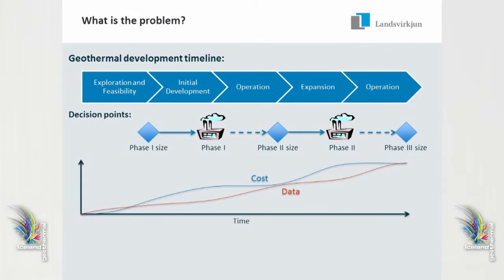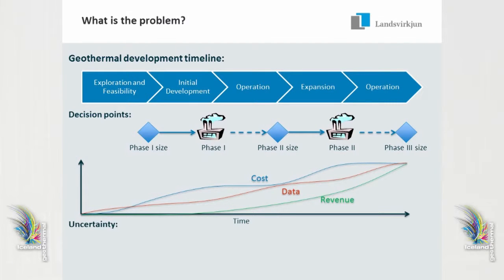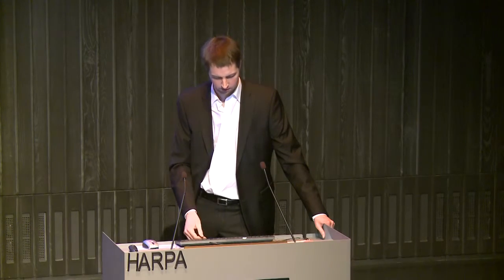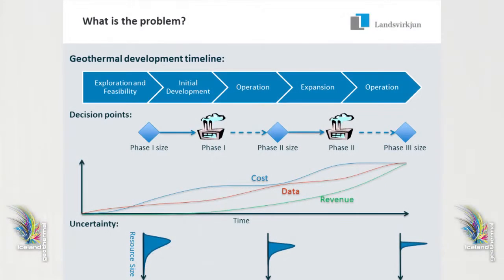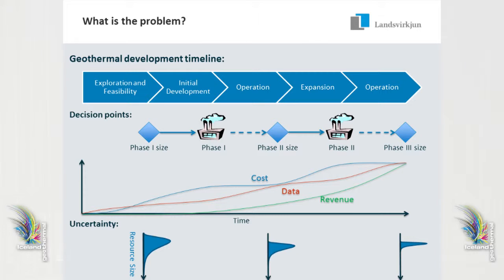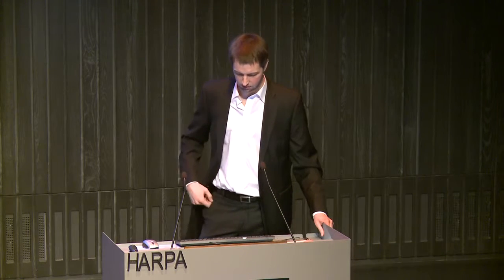We can also look at the way data is accumulating. Data accumulates during the operational phase — that's where we really see whether we have enough energy to support these power plants. Then there's revenue, which comes in as soon as you have your power plant online and you're generating electricity to sell. Another viewpoint is our uncertainty about the size of the resource. At the first stage we have a large distribution in our estimate for resource size. At the second stage that uncertainty has reduced, and at the third stage we more or less know exactly how big our resource is.